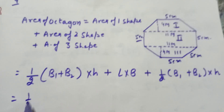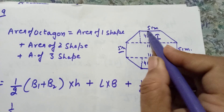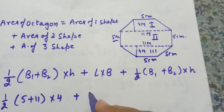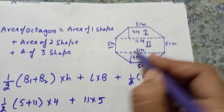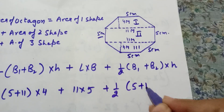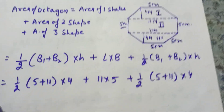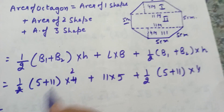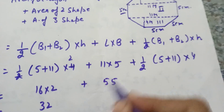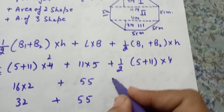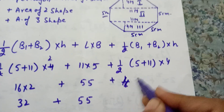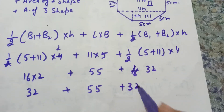Substituting values: half into (11 plus 5) into 4, plus 11 into 5 for the rectangle, plus half into (5 plus 11) into 4. This gives 32 square meters for each trapezium, and 55 square meters for the rectangle. The total area of the octagon is 32 plus 55 plus 32 equals 119 square meters.